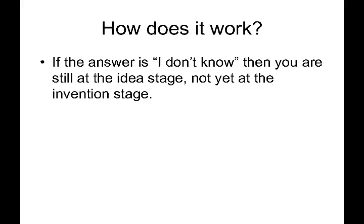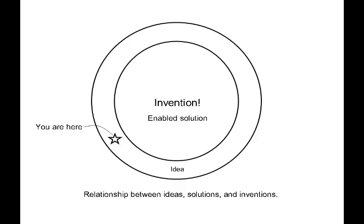So basically, looking at this chart, at this point we're here where the star is — at the idea level — and we want to get into the center where the invention is, which is an enabled solution. So we're introducing a term of patent terminology called enablement. Enablement basically means that there's enough detail to tell somebody how your invention works — not so much just what it does, but how it does it.